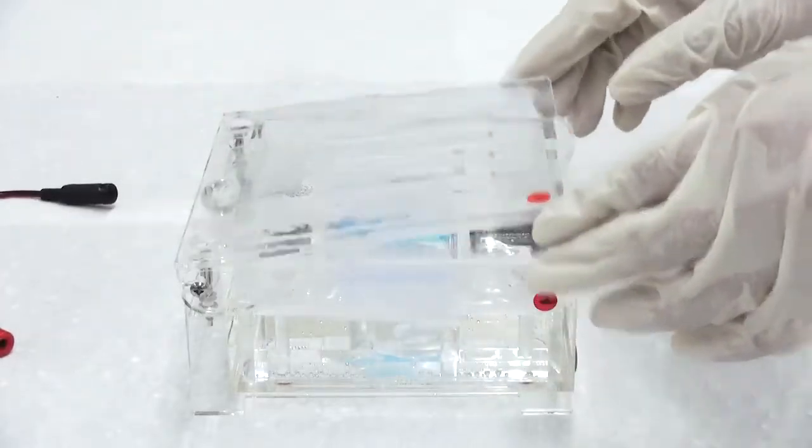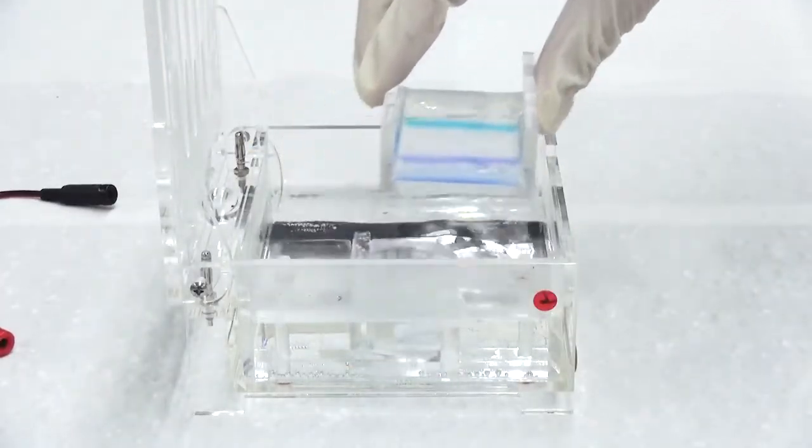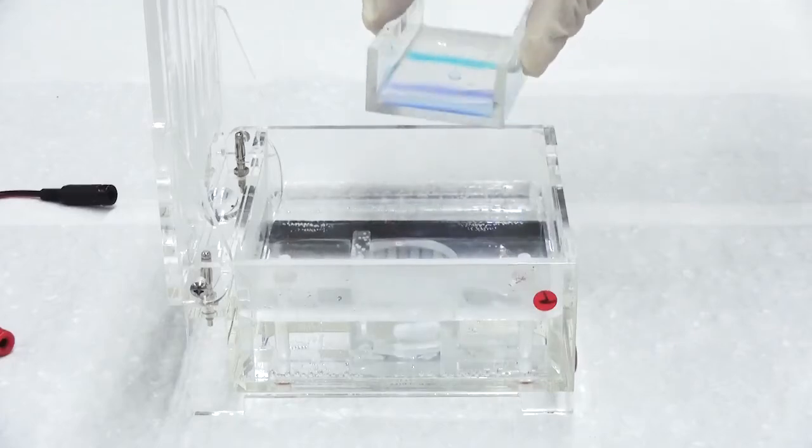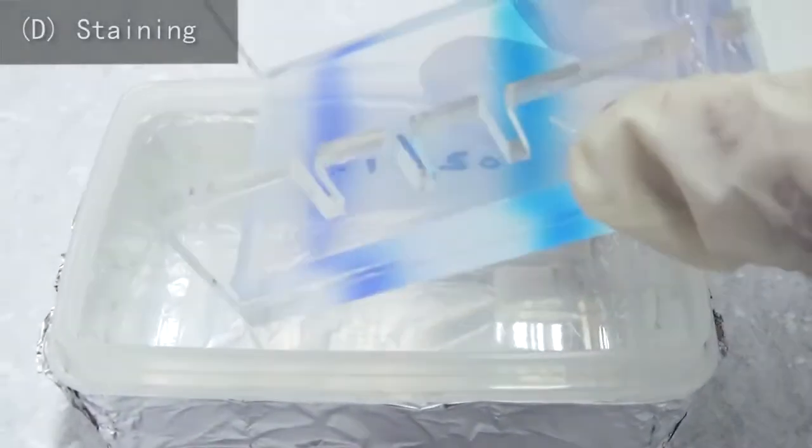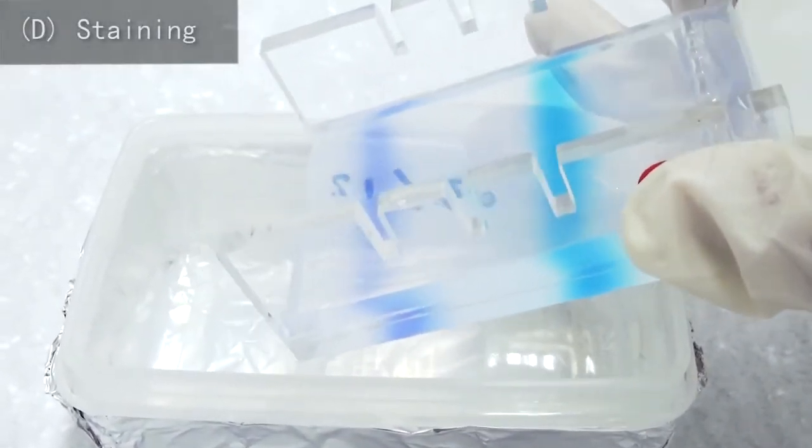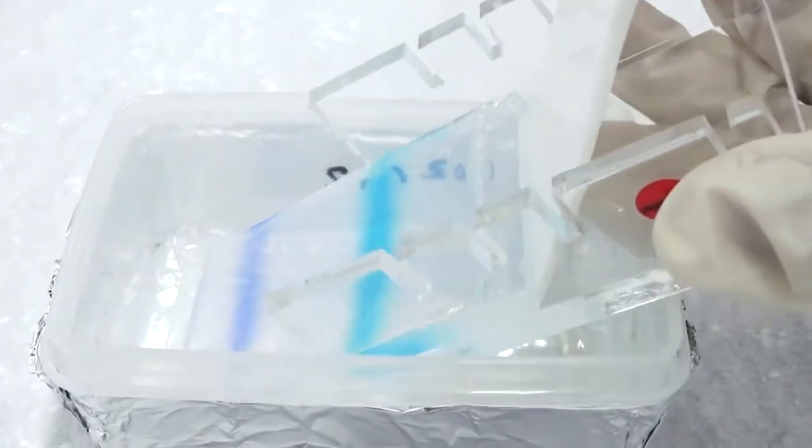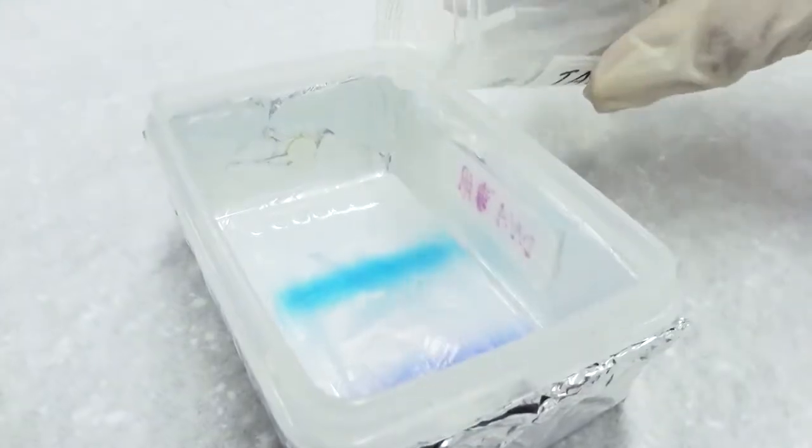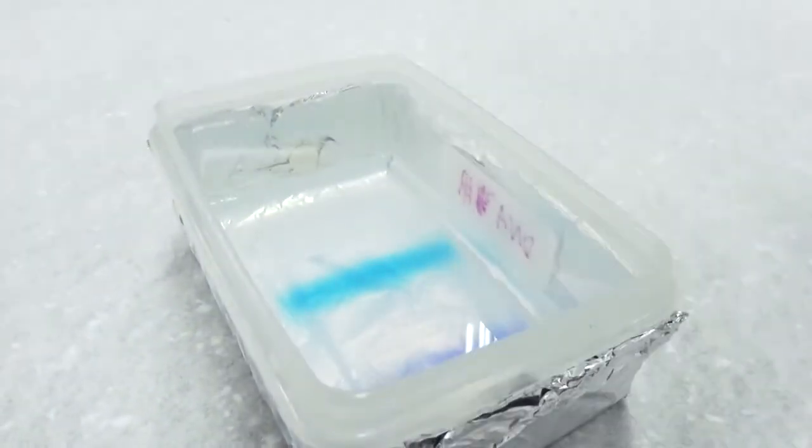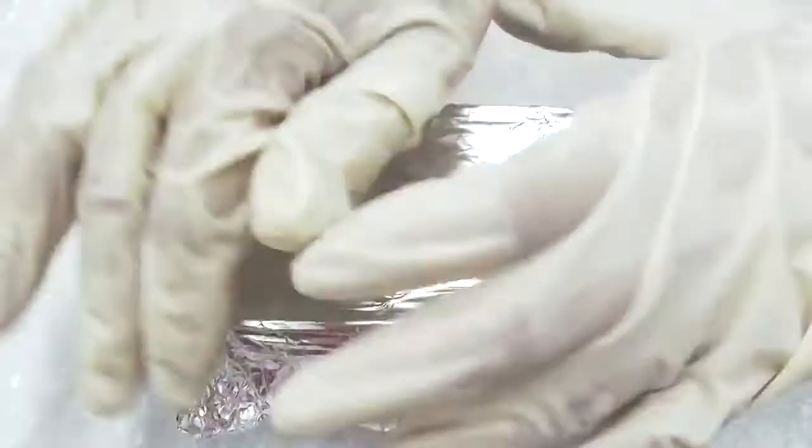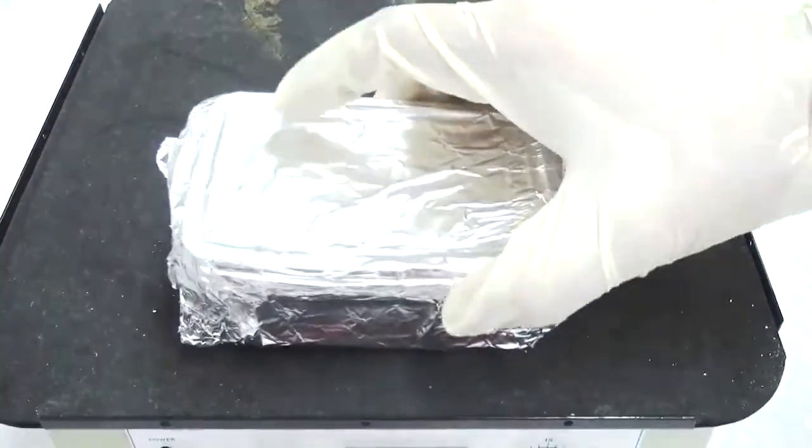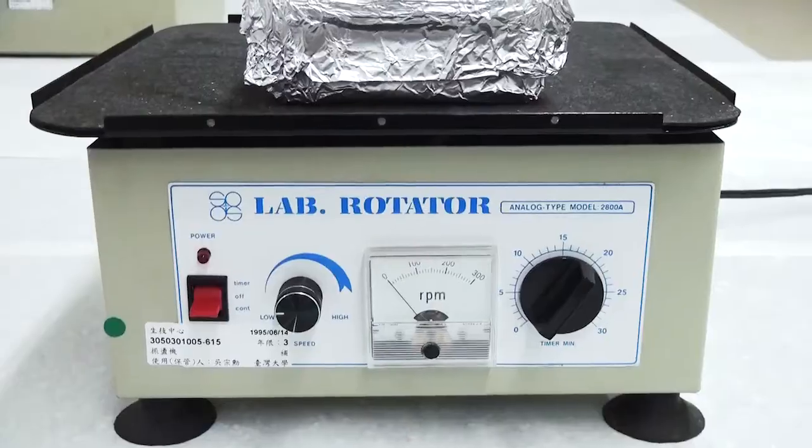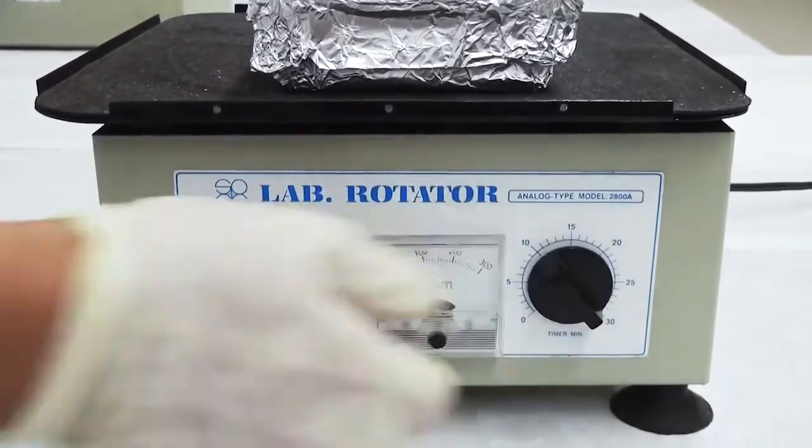Electrophoresis is done. If the loading buffer contains no nucleic acid staining dye, then the gel needs to be stained. Wear gloves to remove the gel carefully from the tray and place it in a staining box wrapped in aluminum foil. Load the required amount of electrode buffer and staining dye. Fasten the lid and cover the box completely in aluminum foil. Place it on a shaker. Shake the gel in the dark for 30 minutes.